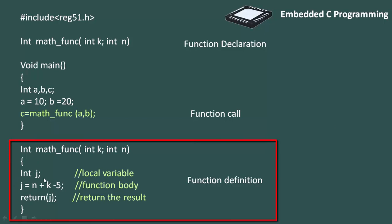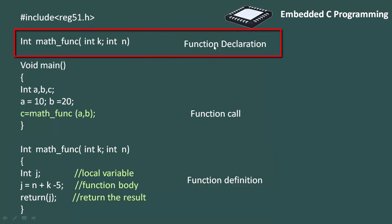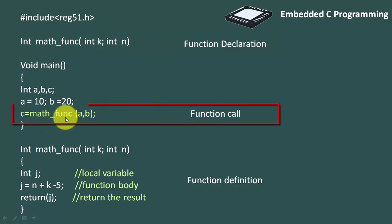Function declaration tells the compiler about the function's name and the types of parameters. This one is called function call. We use function calls normally in the void main function.